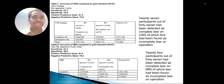For accuracy of USG compared to the gold standard, 27 participants out of 47 had been detected as complete tear on USG, of which 5 had been found as incomplete tear on operation. This came out to be a sensitivity of 81%, specificity of 75%, negative predictive value of 81%, and positive predictive value of 81%.